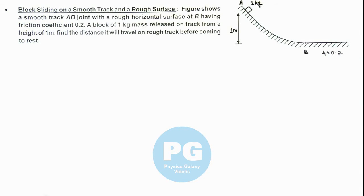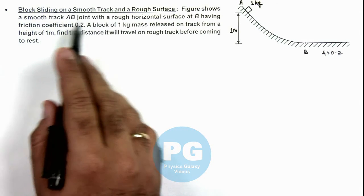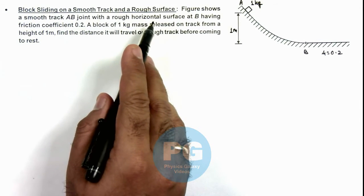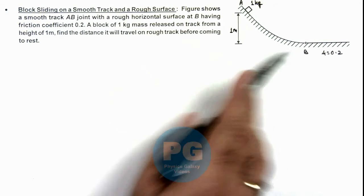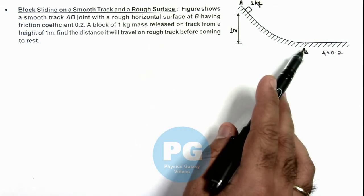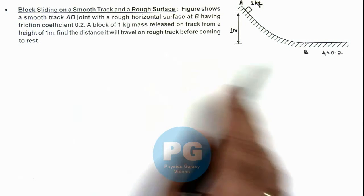In this illustration we'll discuss a block sliding on a smooth track and a rough surface. Here the figure shows a smooth track AB joined with a rough horizontal surface at point B having friction coefficient 0.2.